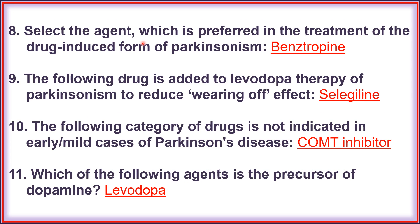Question eight: the agent preferred in the treatment of drug-induced Parkinson's is benzotropine. Question nine: the drug added to levodopa therapy to reduce the wearing-off effect is selegiline. Question ten: the category of drug not indicated in early or mild cases of Parkinson's disease is COMT inhibitors — examples are entacapone and tolcapone.